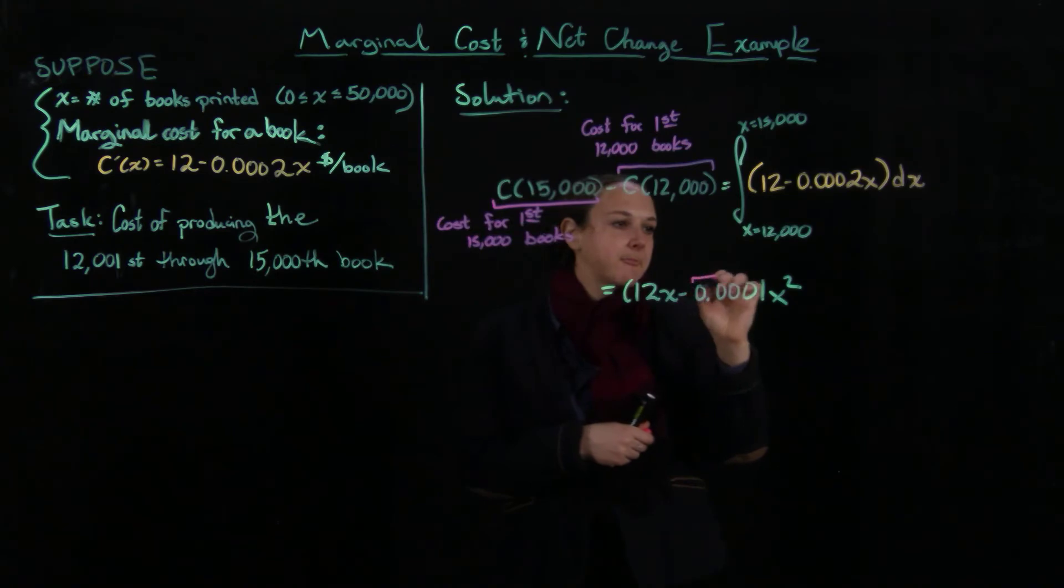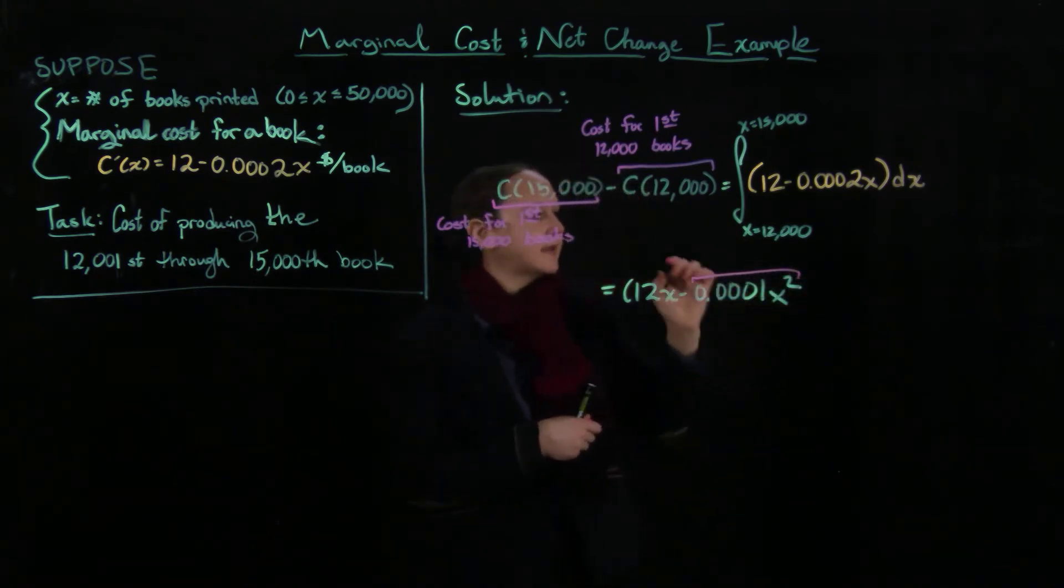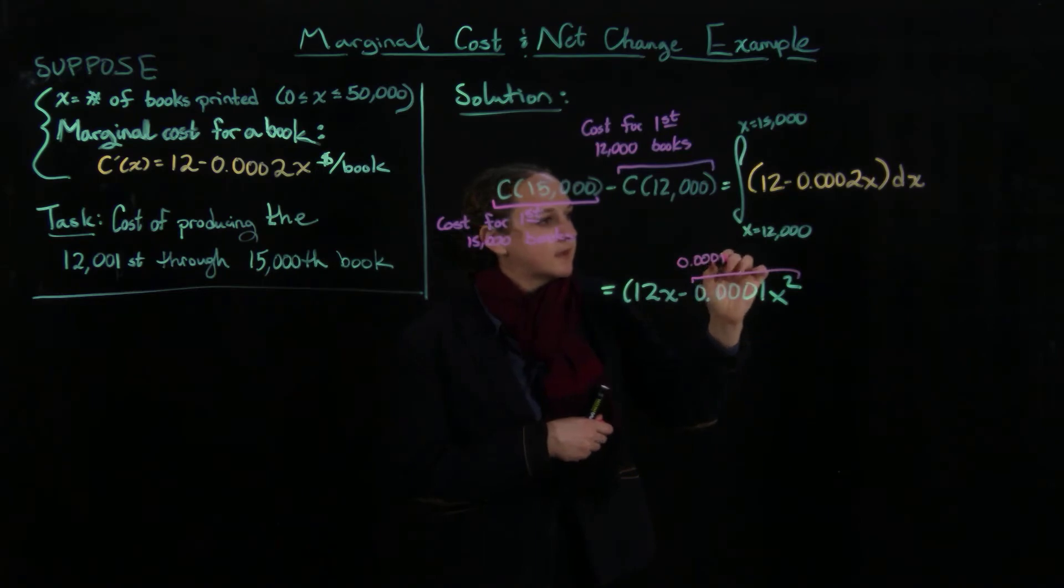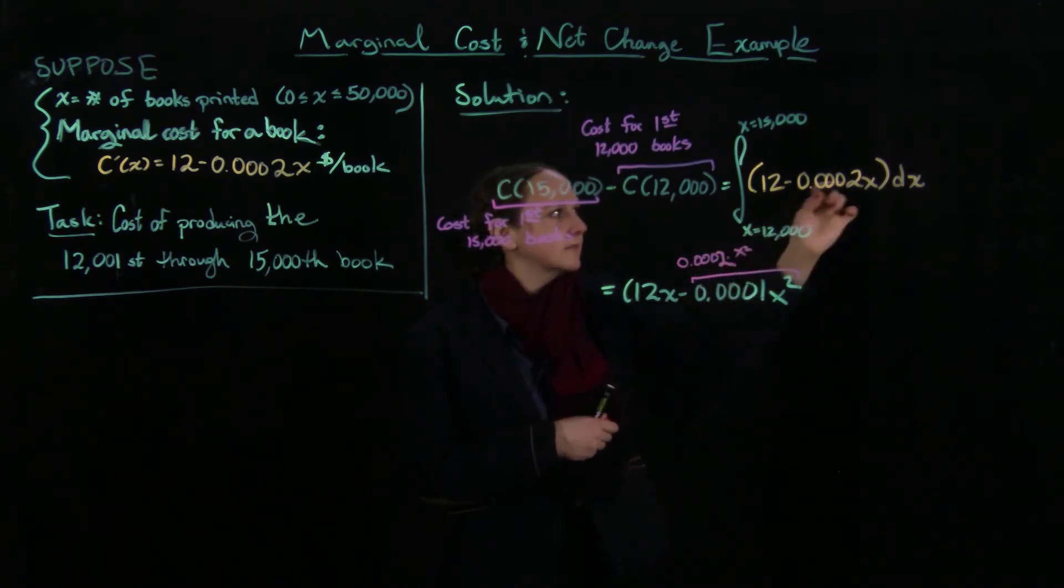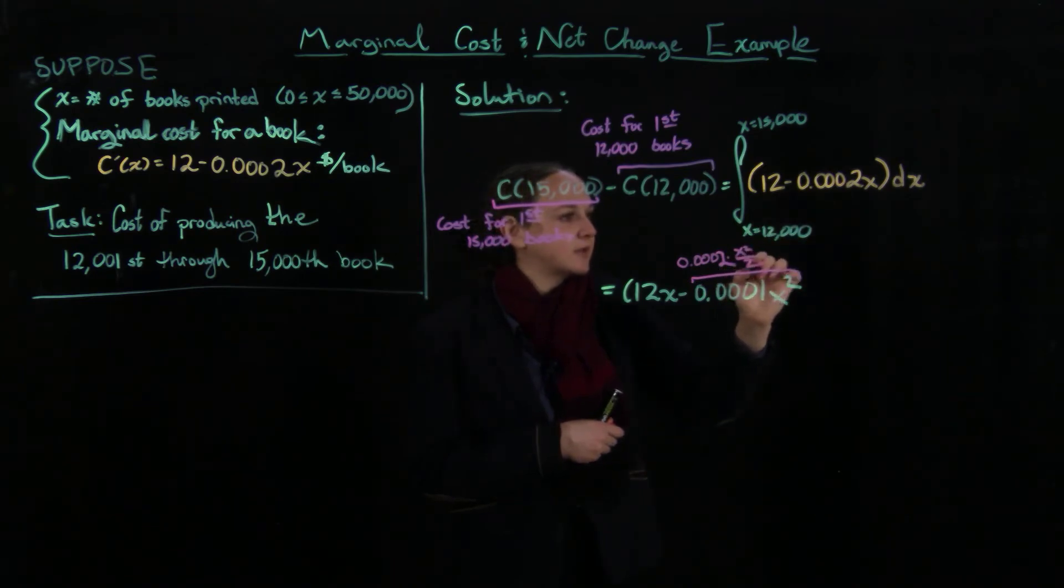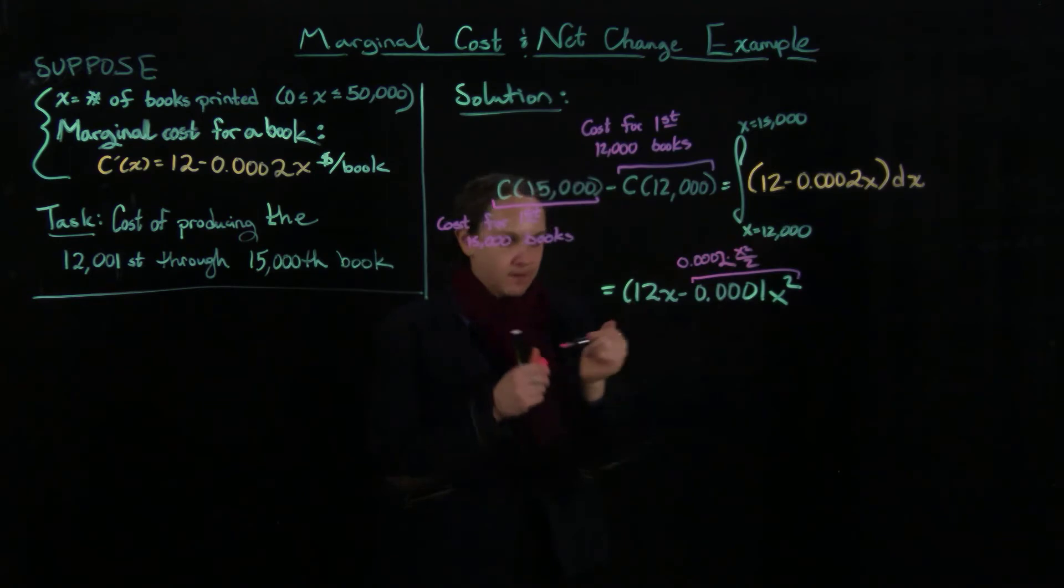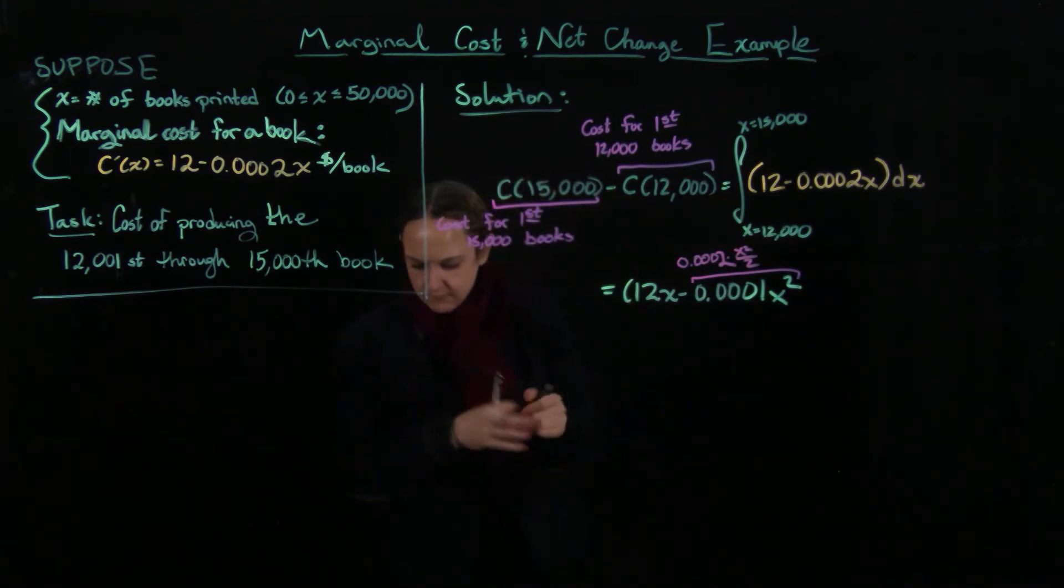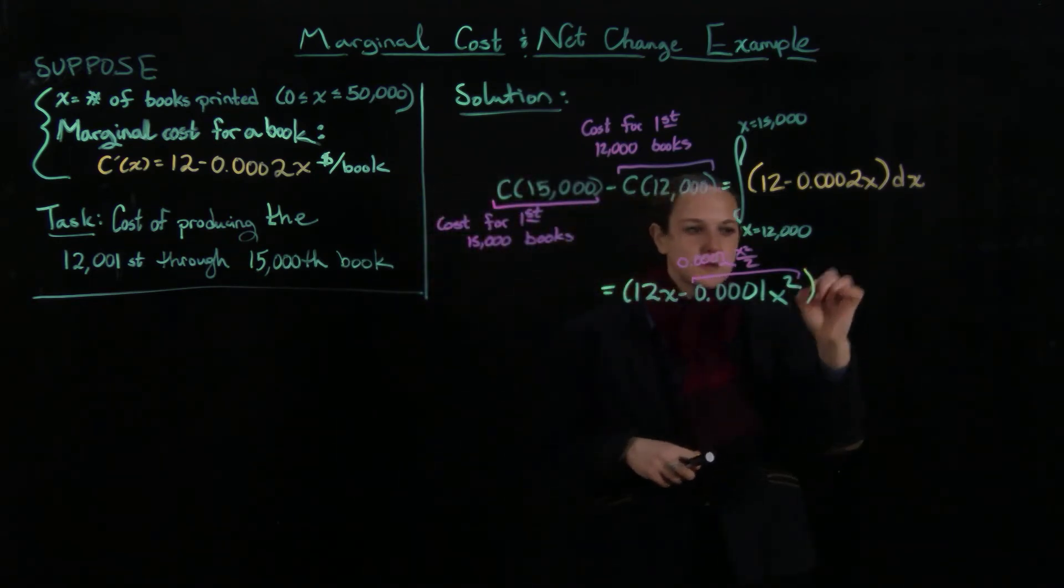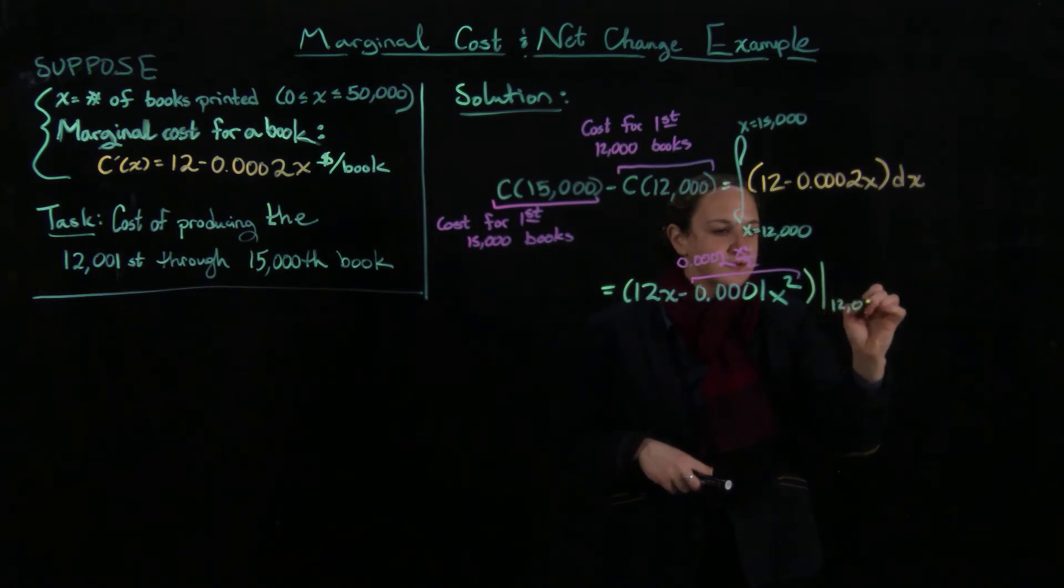This is the same thing as 0.0002 times x squared divided by 2. And so when we divide by 2, that's how I end up with a 1 there. And this goes from 12,000 to 15,000.